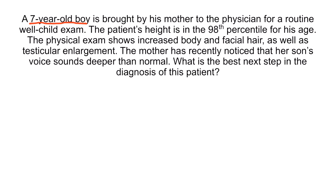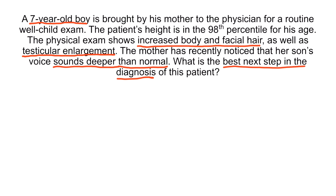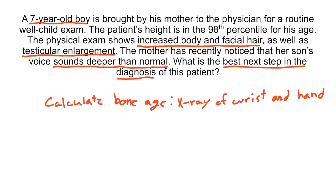A 7-year-old boy is brought by his mother to the physician for a routine well child exam. The patient's height is in the 98th percentile for his age. The physical exam shows increased body and facial hair as well as testicular enlargement. The mother has recently noticed that her son's voice sounds deeper than normal. Since these secondary sex characteristics developed before the age of 9, he may have precocious puberty. The best next step in the diagnosis would be an x-ray of the hand and wrist to evaluate the bone age. If the bone age is greater than the patient's chronological age, true precocious puberty is likely and further workup is indicated.